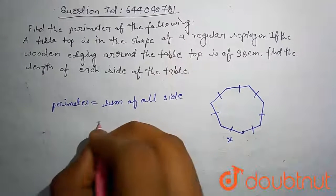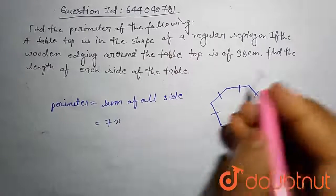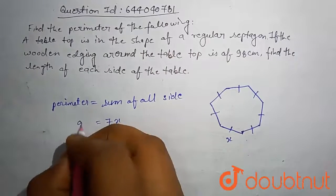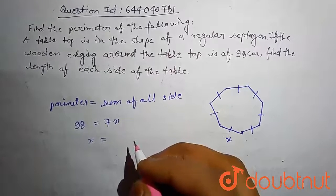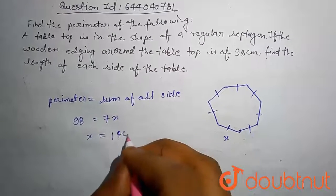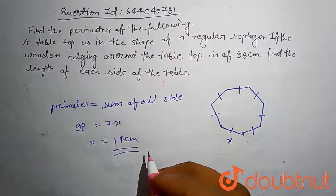Then perimeter equals 7 times the side length, and perimeter is given as 98 centimeters. So 7x = 98, which gives us x equals 14 centimeters. This is our final answer. Thank you.